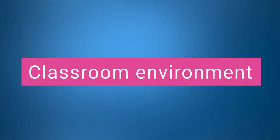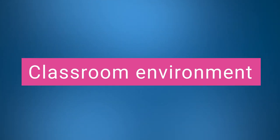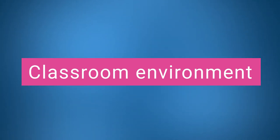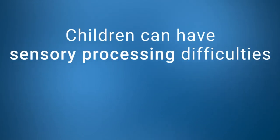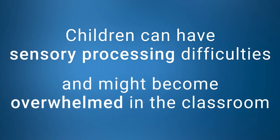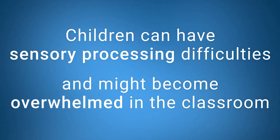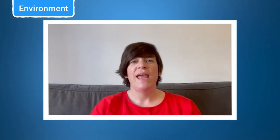Consider your classroom environment. It's really important to think about how inclusive your classroom environment is. Autistic children can have sensory processing difficulties and can become overwhelmed by their environment. Avoid sensory overload in your classroom. Using calm colours can help children to focus. Aim to reduce the number of posters and distracting visual displays in your classroom. If you have enough room, you could include a breakout space or quiet space where children can go to relax if they are feeling overwhelmed or need time out from the sensory overload of the classroom.